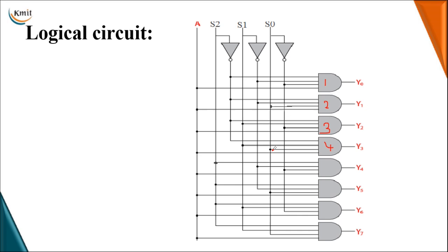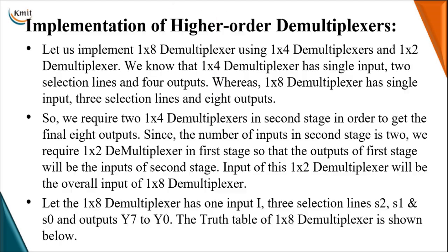The sixth AND gate handles 1,1,0 — S2 is logic 1, S1 is logic 1, S0 is logic 0. The seventh AND gate generates output for S2=1, S1=1, S0=0 — so S2, S1, and S0_bar are connected. For the last AND gate, all selection inputs are logic 1, so S2, S1, and S0 are directly connected as its three inputs, transferring output when S2, S1, S0 are all 1.